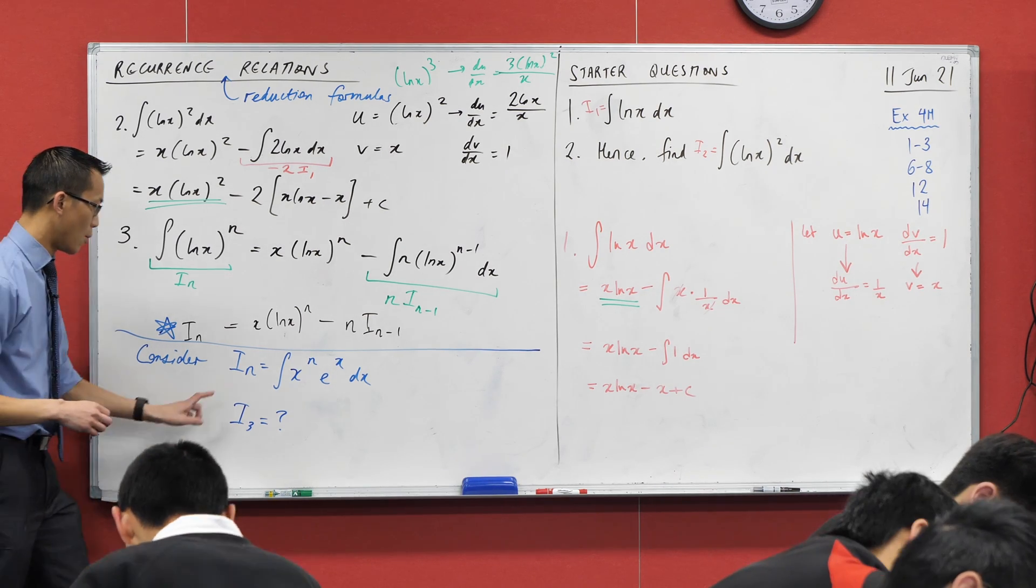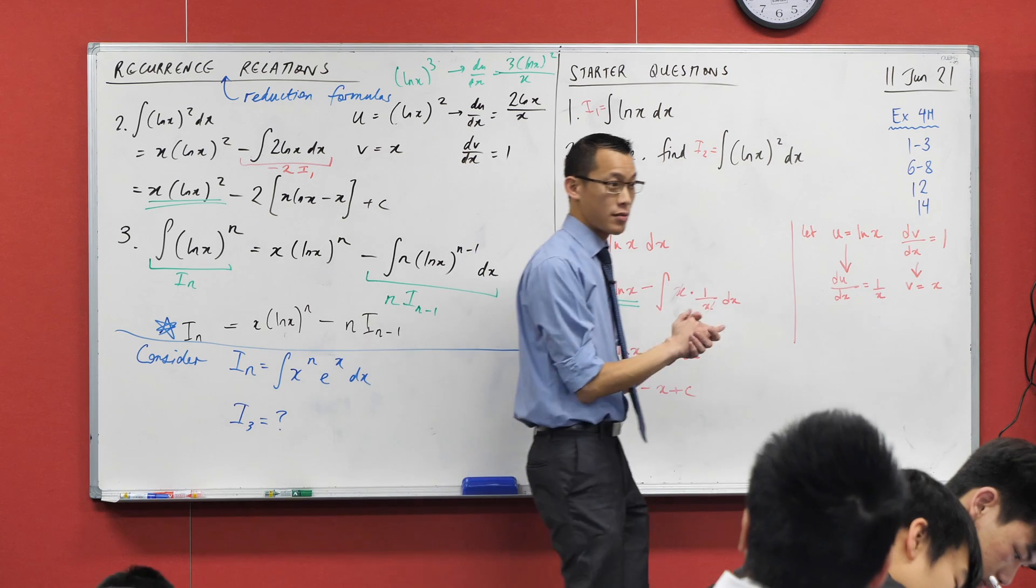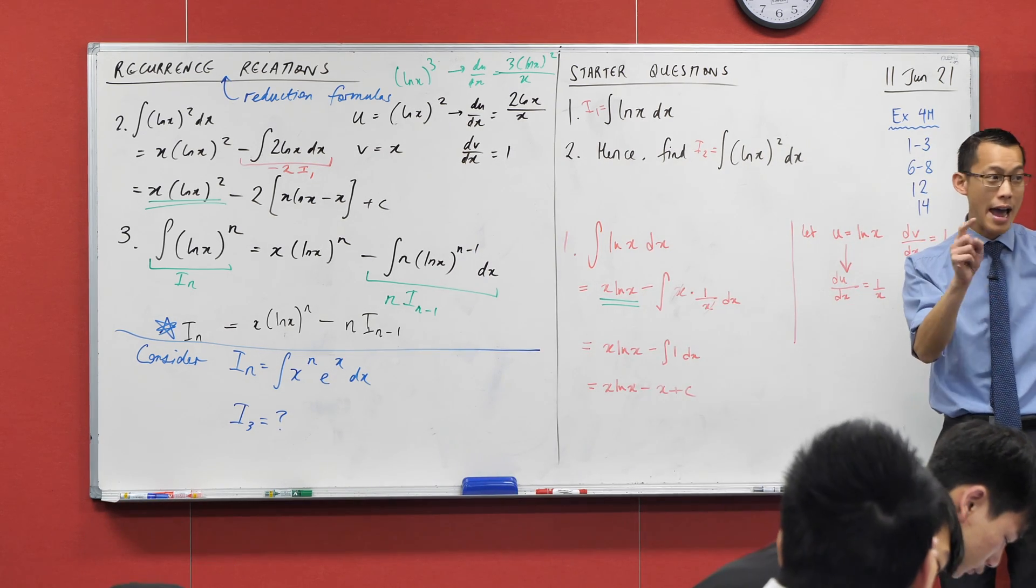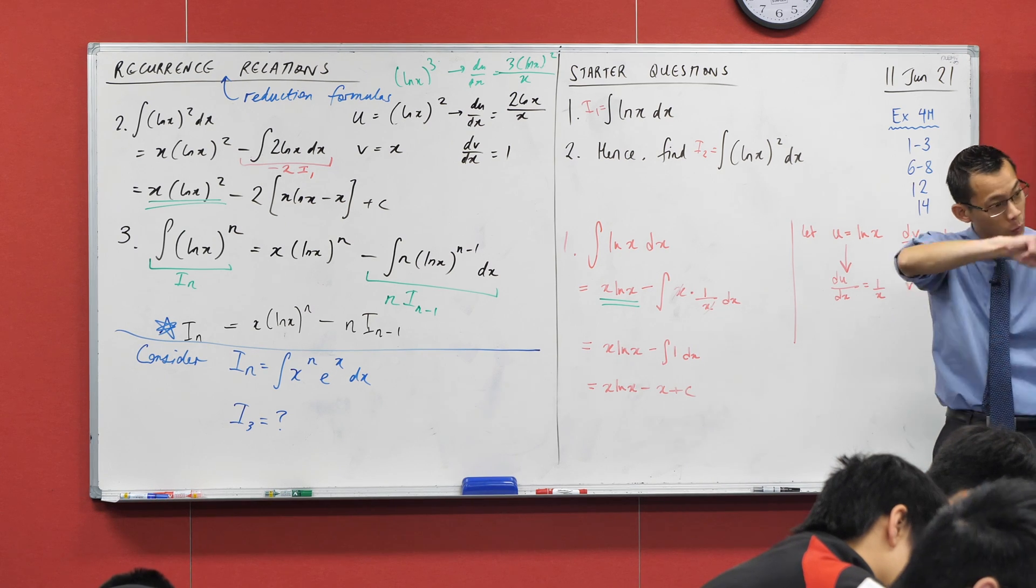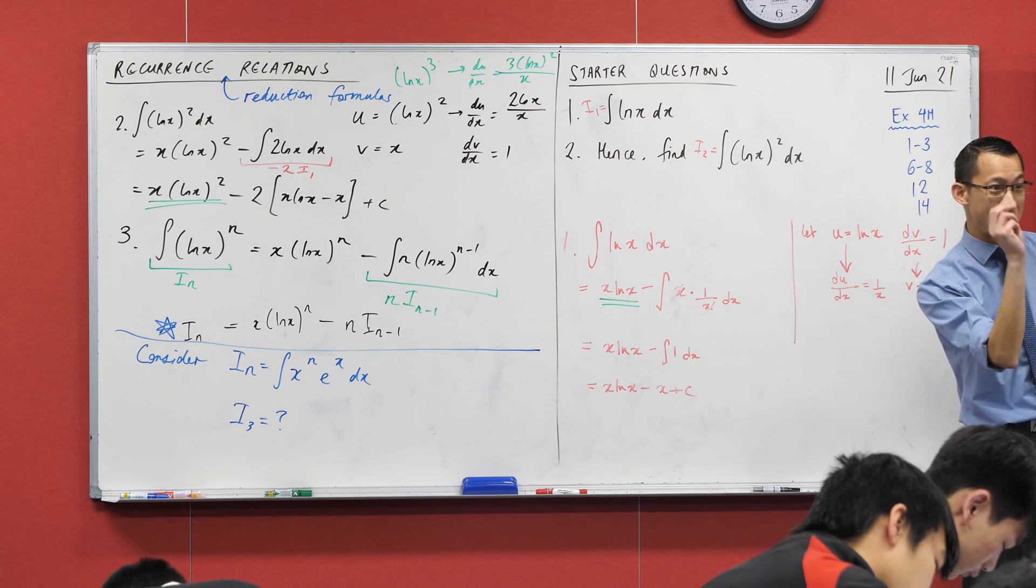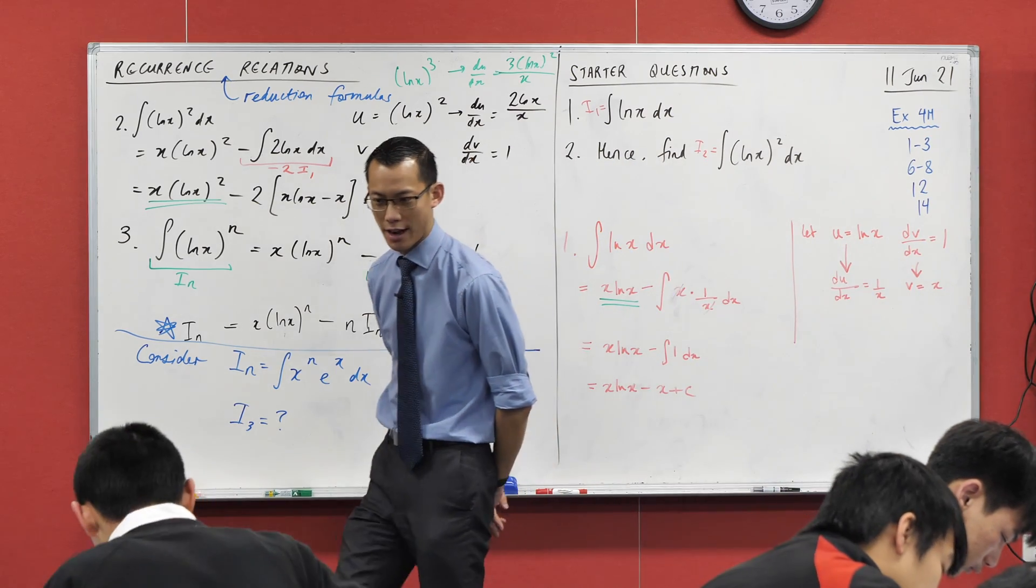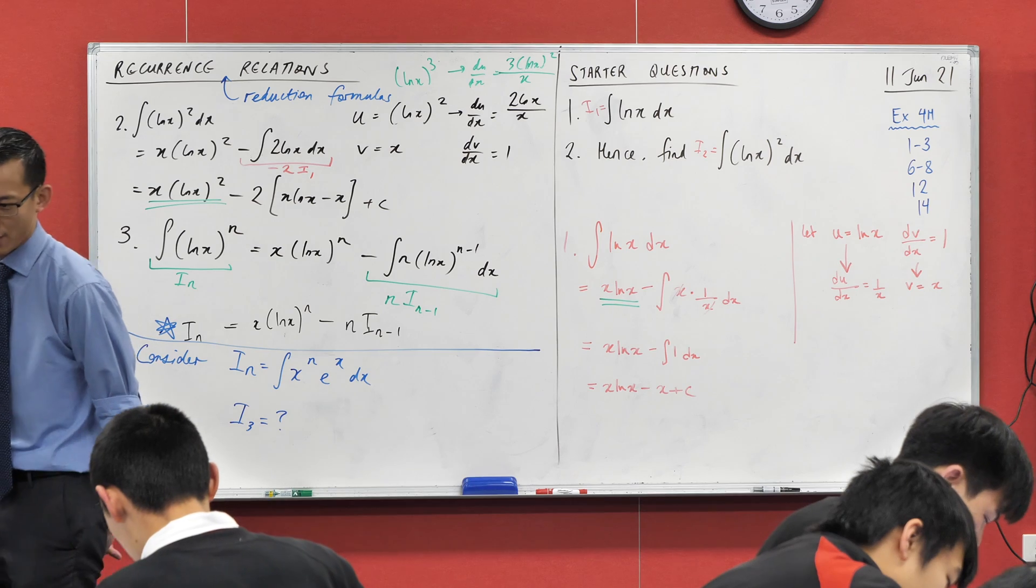You can choose which is going to be u, which is going to be dv, and you're going to get a recurrence relation out of it. Once you've done that, let's see if we can work out, once you've got a recursive formula for it, something that looks like this. Let's see if we can use that to work out what i3 is. So there's our two steps.